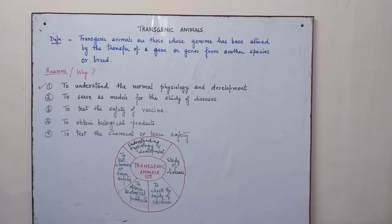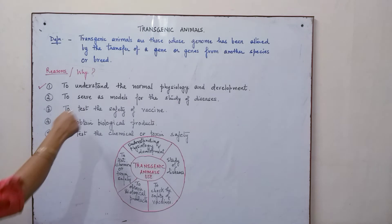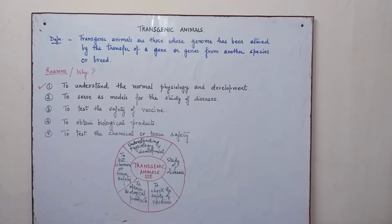For example, genes for growth factors such as Insulin-like Growth Factor, or IGF, from other species that alter this factor are introduced into animals, and then studies are conducted. By studying the biological effects, information is obtained and the biological role of these factors is studied. This helps in understanding normal physiology and development.